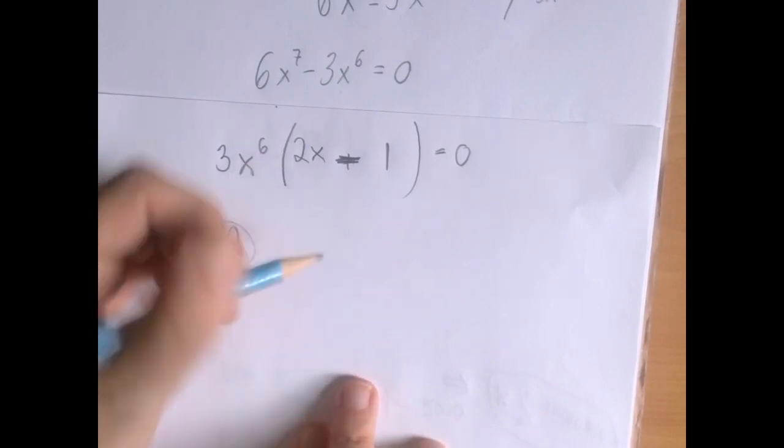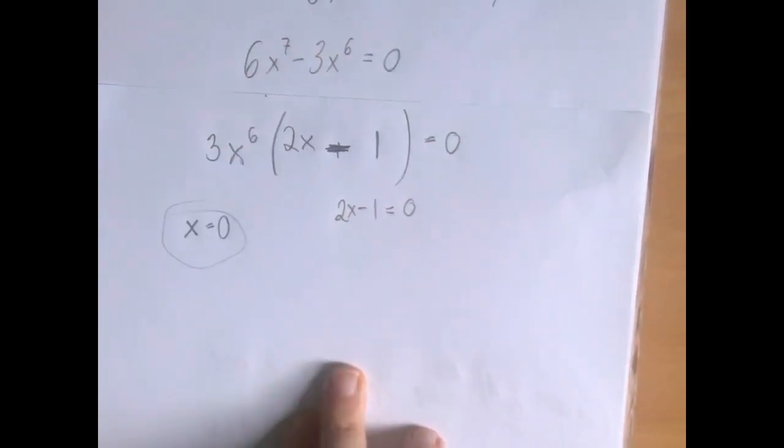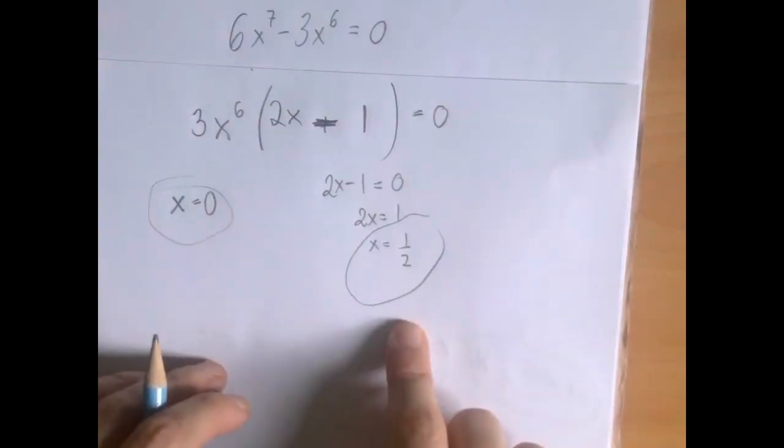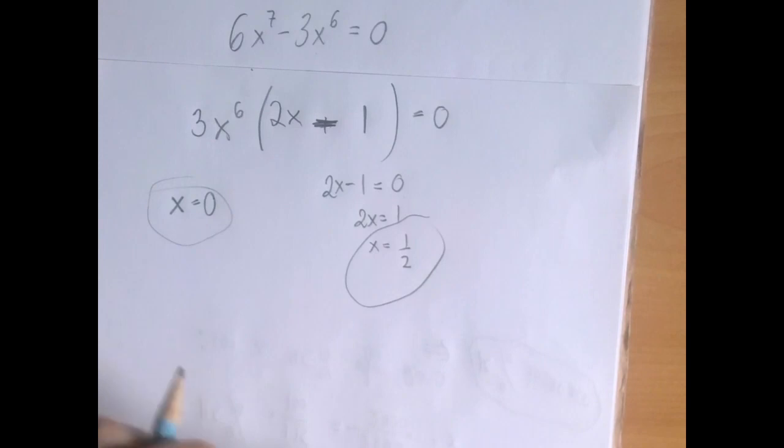And then 2x minus 1 equals 0 is the other linear equation, which we solve for x. So we have two solutions, 0 and 1 half.